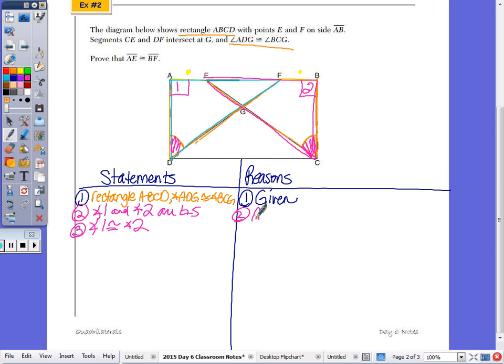So angle one and angle two are right angles. And then angle one is congruent to angle two. And as she said, a rectangle has four right angles. And then number three, all right angles are congruent.